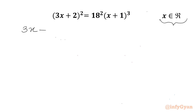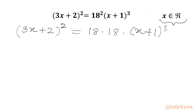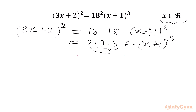I will write our equation: (3x + 2)² = 18(x + 1)³. Now we will factor 18. We can write 18 as 2 times 9, and also 18 as 3 times 6. Then we have (x + 1)³. Now 9 times 3 is 27, and 2 times 6 is 12, so we can write 12 times 27 times (x + 1)³.